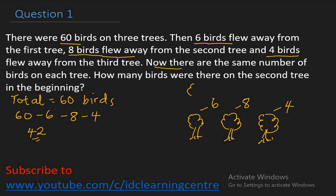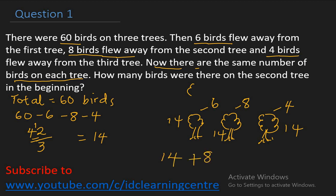The question says now there are the same number of birds on each tree. So take this remainder and distribute it equally among the three trees — divide by three. 42 divided by three is 14. So after subtracting the birds that flew away from the first, second, and third tree, we are left with 42, which gives 14 on each tree. The question asks how many birds were on the second tree in the beginning: we have 14, plus the eight that flew away, so the answer is 22.